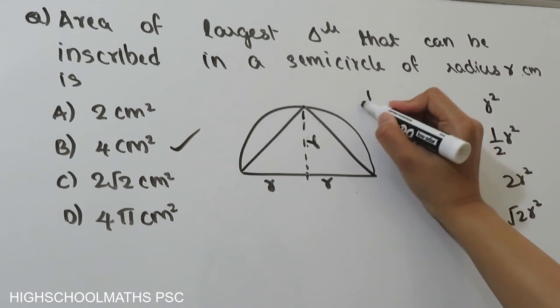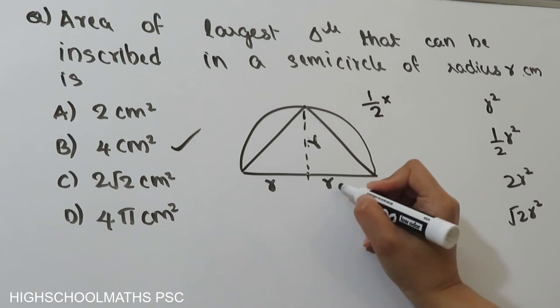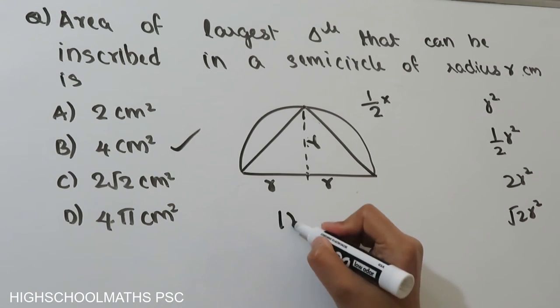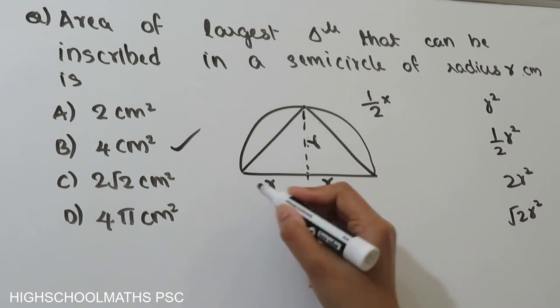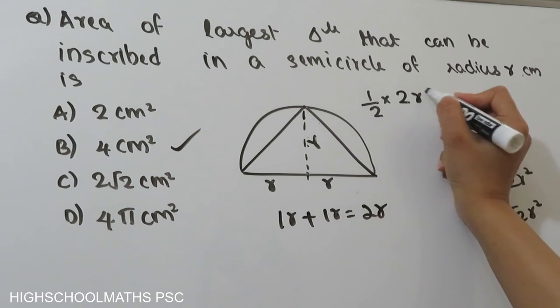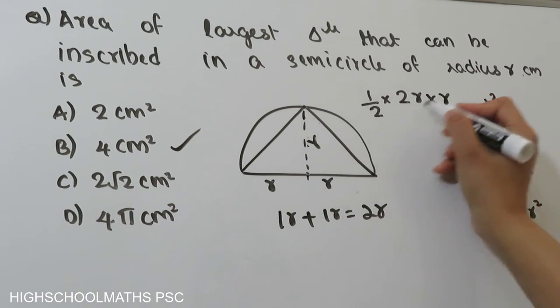We have to write the height as R. Half into base: the base is R plus R, so R plus R equals 2R. Then 2R into height, where height equals R.